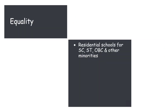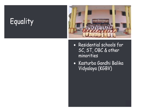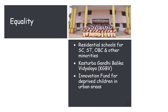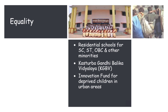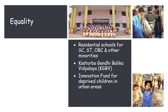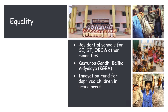Interventions under equality include: setting up residential schools at upper primary level for girls, especially for SC, ST, OBC, and other minority communities; setting up Kasturba Gandhi Balika Vidyalaya in educationally backward blocks where the female literacy rate is below the national average; and an innovation fund for deprived children in urban areas — such as street children, migrant children, rag pickers, child laborers, children affected by migration, and children without adult protection — so they can also join elementary education.